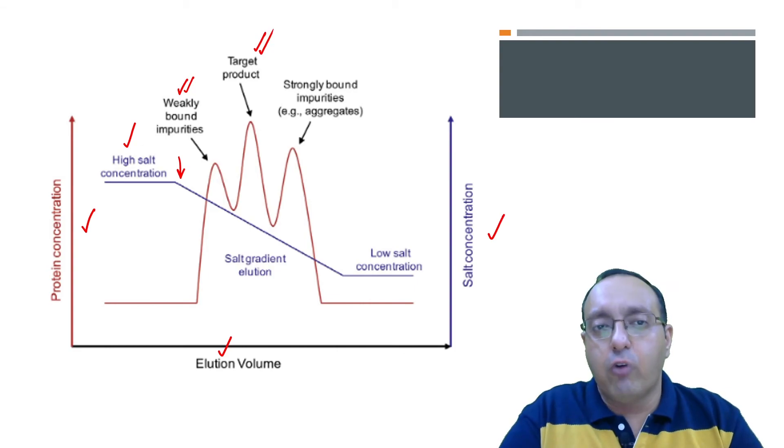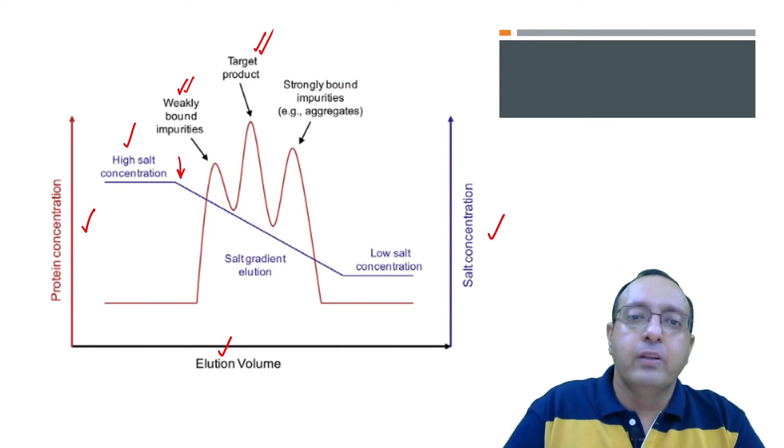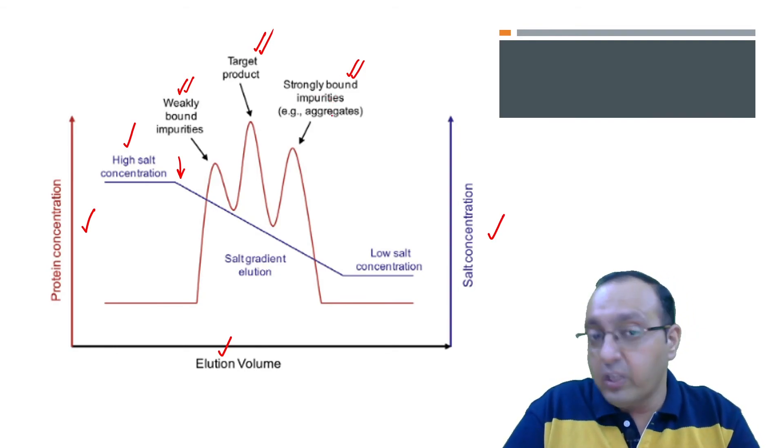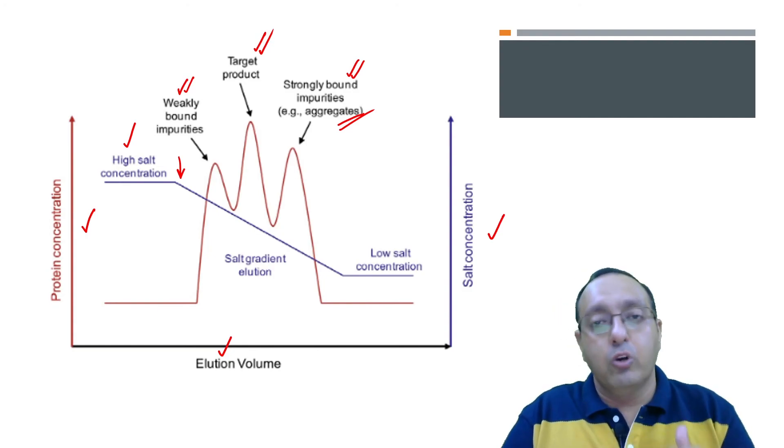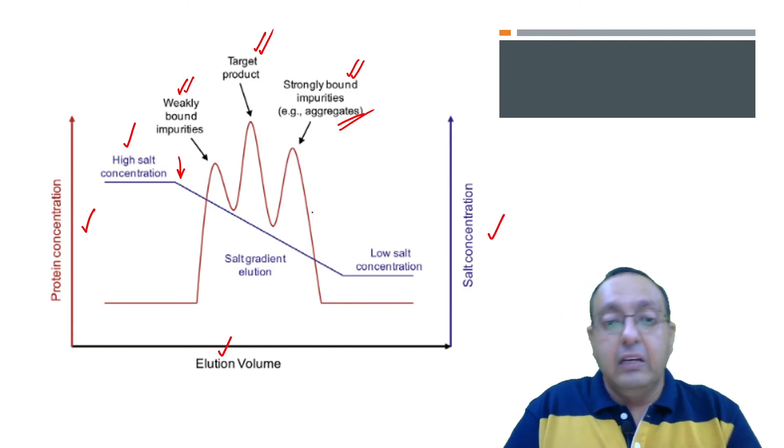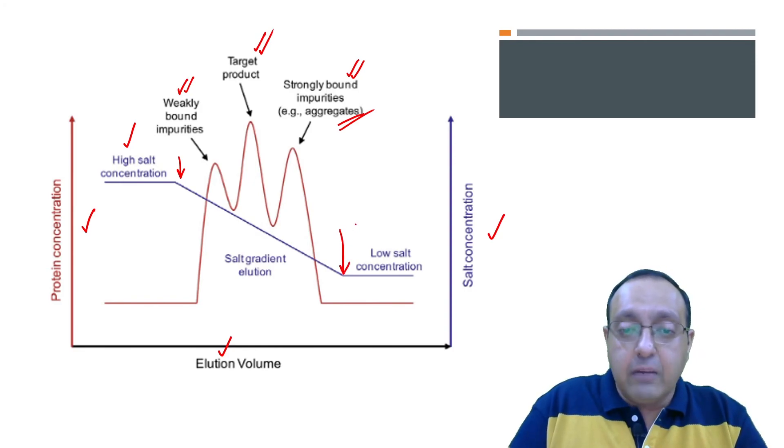Then we have the target product. This is the protein that we want to purify. And then we have strongly bound impurities. These are even more strongly bound as compared to our target protein, but they are really hard to get off. So we have to get it off by using even lower concentrations of the salt. So zero molar ammonium sulfate, for example. Effectively at the last step, there is column regeneration, so the column can be used multiple times.